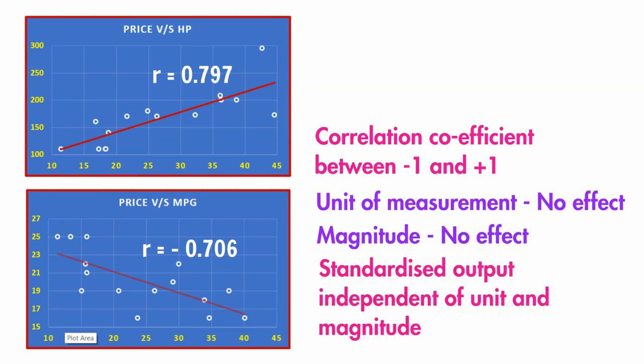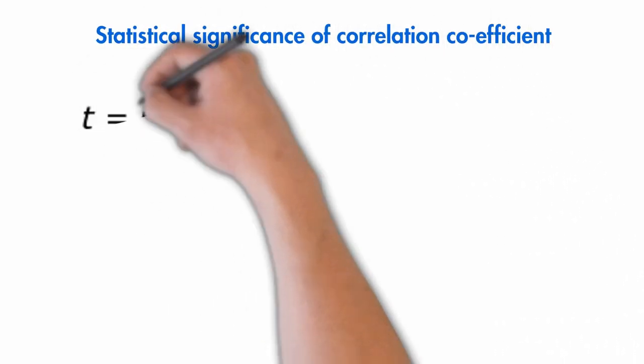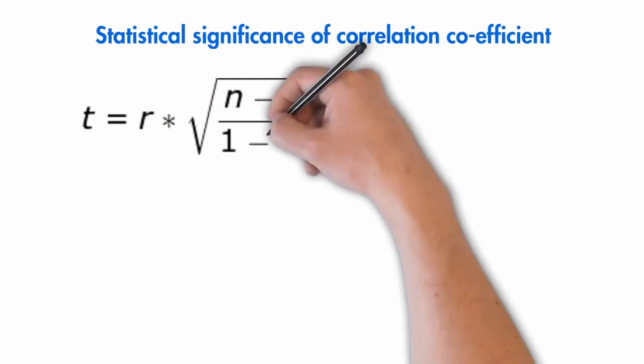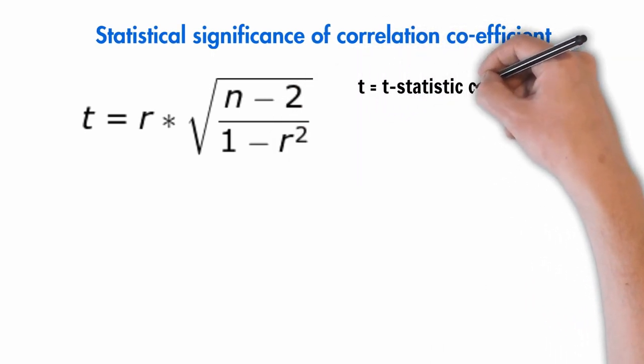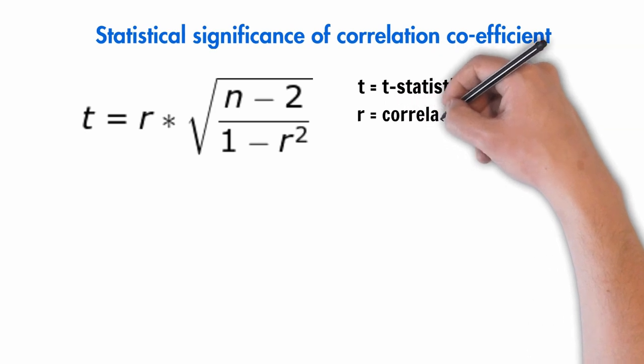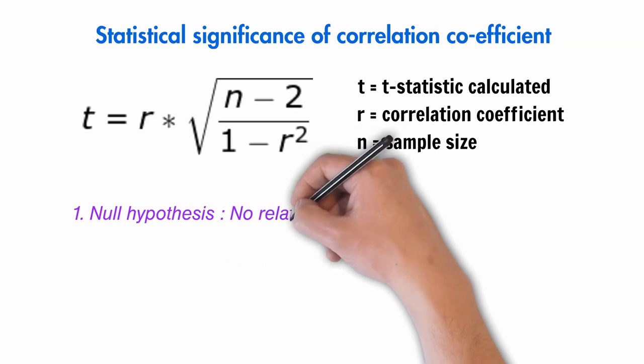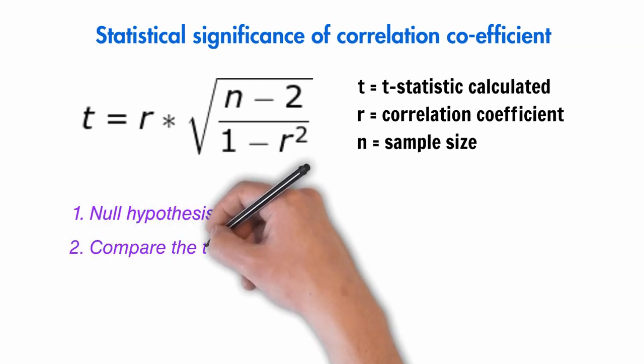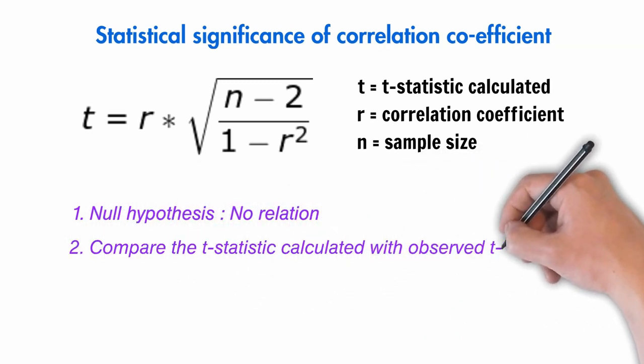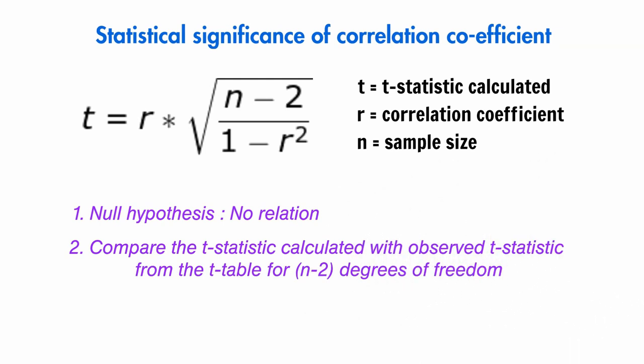Finally, we move on to an important part of the discussion, the statistical significance of correlation coefficient. The formula for calculating t statistic for the correlation coefficient is as such. Here, t refers to the calculated value of the t statistic using our data, r is the correlation coefficient, and n is the sample size. The process is that we set up the null hypothesis. We state it mentioning that there is no relationship between two variables. Then we calculate the t statistic and compare that value with the observed t value from the t table for the n minus 2 degrees of freedom.